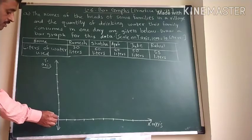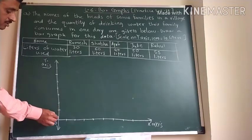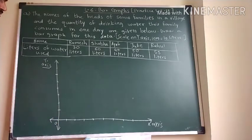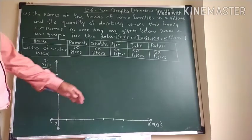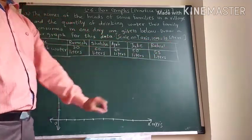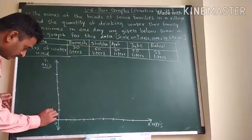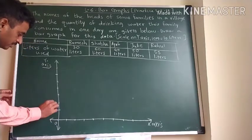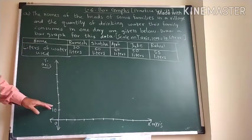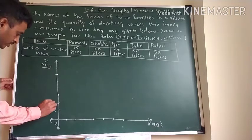Now from 0, 10 millimeters are there. So this becomes 1 cm. And for 1 cm we have to show 10 liters. So 10 liters. Then again 1 cm means 10 plus 10 is 20 liters.